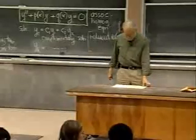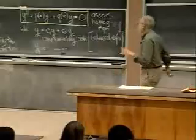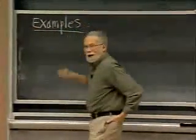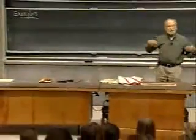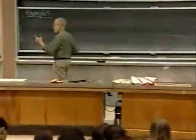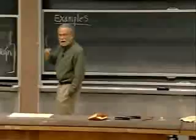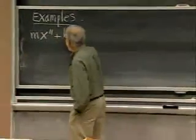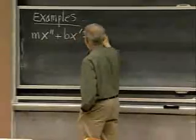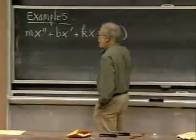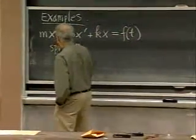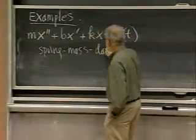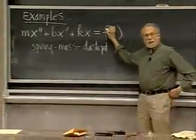There are two classical examples. The model you know already is the spring-mass-dashpot system: m x double prime plus b x prime plus k x equals f of t, where m is the mass, b is the damping constant, and k is the spring constant. Up to now, f of t has always been zero.